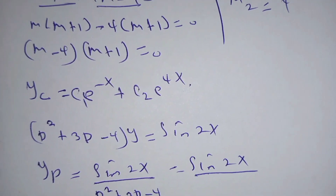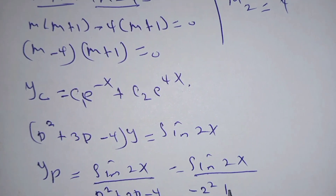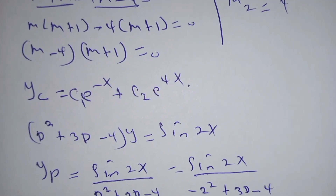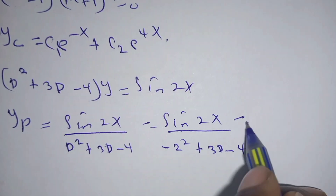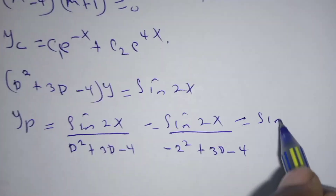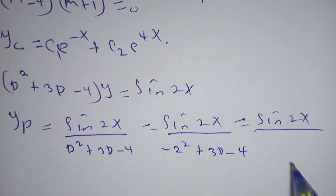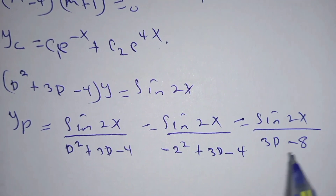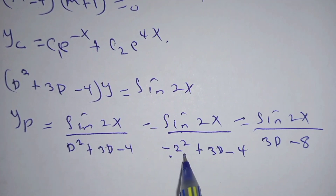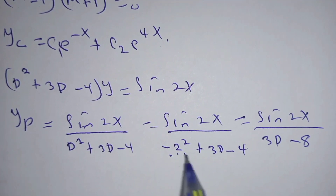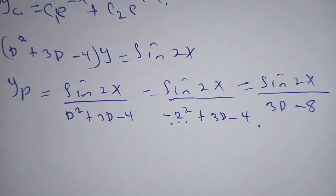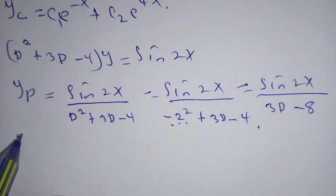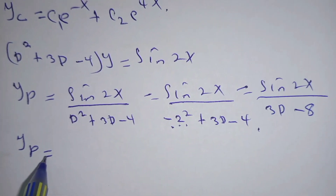We substitute D squared equals negative 2 squared, which equals negative 4. So the denominator becomes negative 4 plus 3D minus 4, which simplifies to 3D minus 8. Therefore yp equals sin(2x) divided by (3D minus 8).